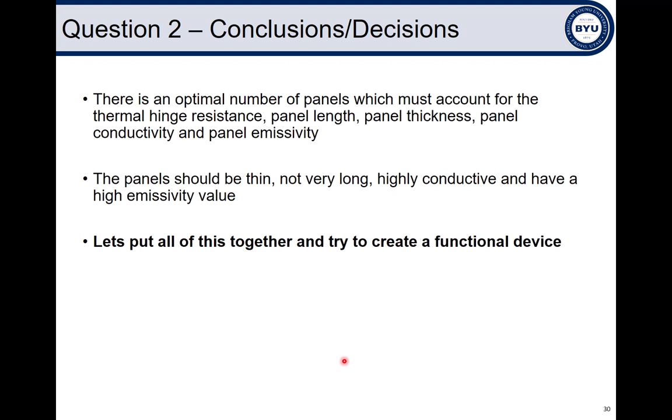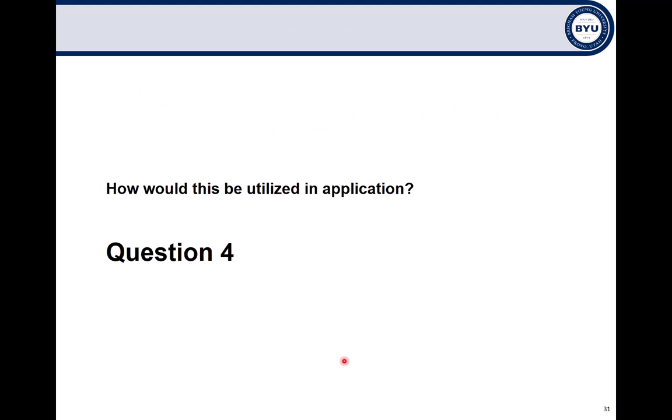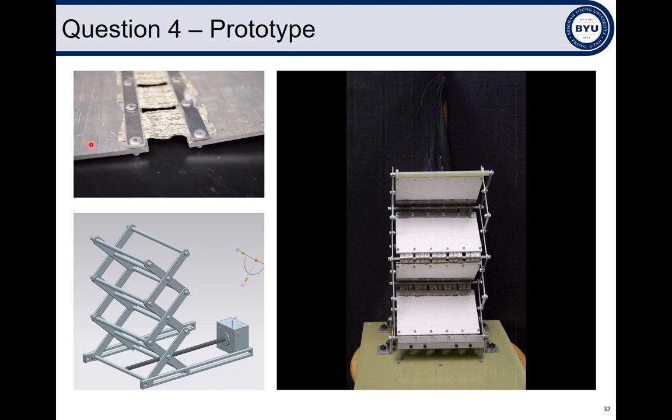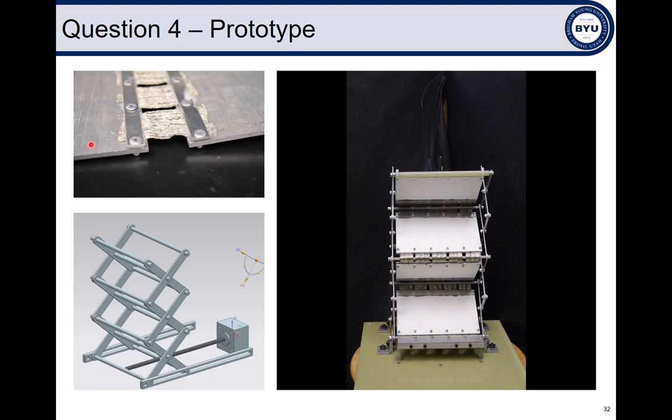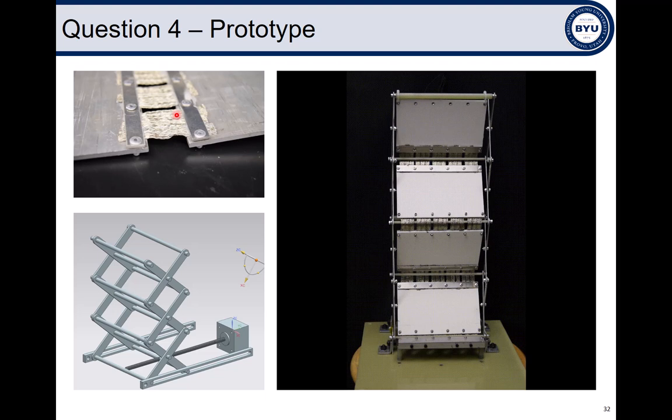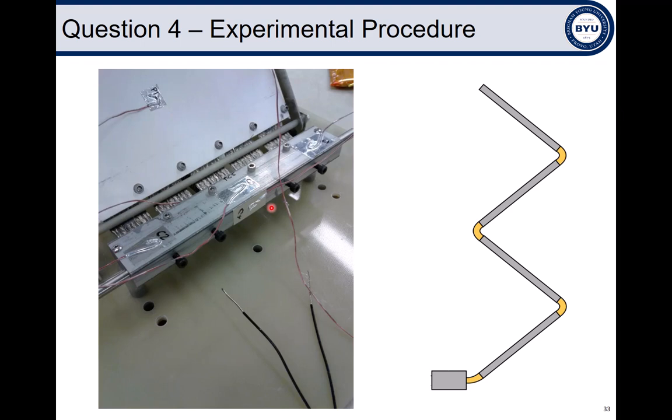Now, let's put all this together and make an actual functional device, which is question four. How is this even going to look when we utilize it? We've developed a deployable radiator prototype, utilizing an aluminum support structure, that's actively manipulated by a stepper motor. Solid aluminum panels, coated in a specialized paint, are connected via a lab-made thermal hinge, which provides flexibility and conductivity. The purpose of this prototype was to demonstrate the viability of an actively controlled radiator. As such, the components have not yet been optimized for performance or designed to account for the harshness of the space environment.